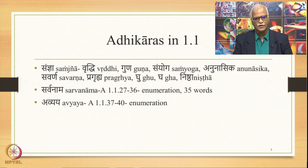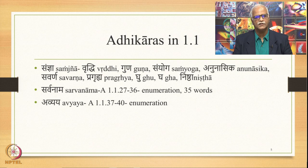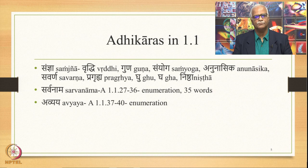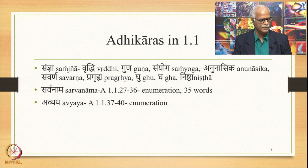Hereafter we shall take a panoramic view of the Ashtadhyayi by looking at important Adhikaras stated in the text. We start with 1.1, and the one Adhikara not stated by Panini but stated by commentators is Saudhnyas. In 1.1 there are lots of Saudhnyas stated, and therefore Katyayana suggests there should be this Adhikara Saudhnyas.